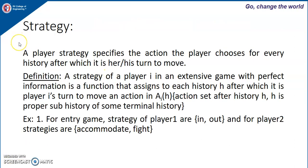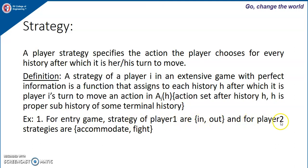Now let us study some terminologies. A player's strategy specifies the action the player chooses for every history after which it is his or her turn to move. A strategy of player i in an extensive game with perfect information is a function that assigns to each history h, after which it is player i's turn to move, an action in A_i(h). For example, in the entry game the strategies of player 1 are 'in' and 'out', and for player 2 the strategies are 'accommodate' and 'fight'.